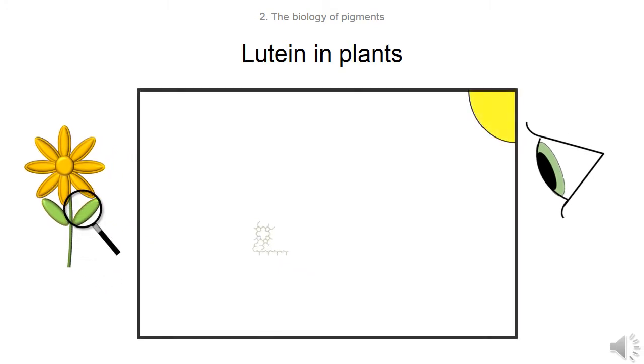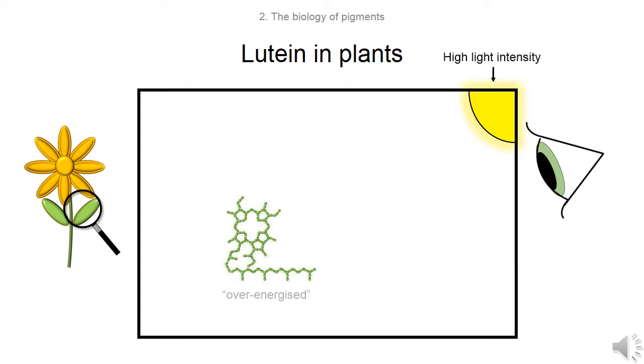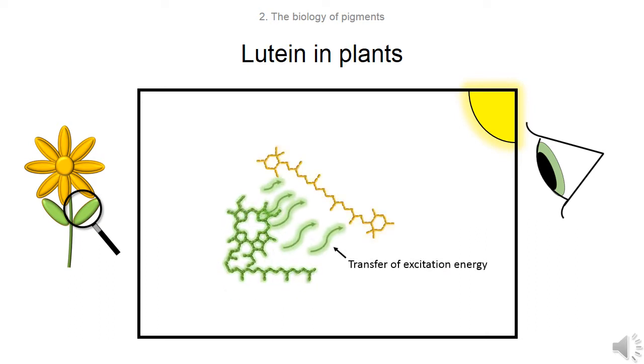Chlorophyll is the main light harvesting pigment in plants. It absorbs blue and red light and uses the energy to grow by photosynthesis. At high light intensities, chlorophyll can become over-energised. This form of chlorophyll is toxic to the cell, unless the excess energy can be transferred to lutein and dissipated harmlessly as heat.